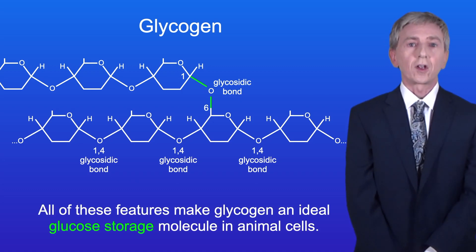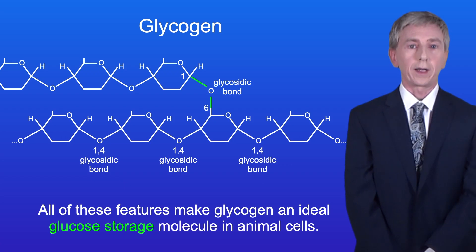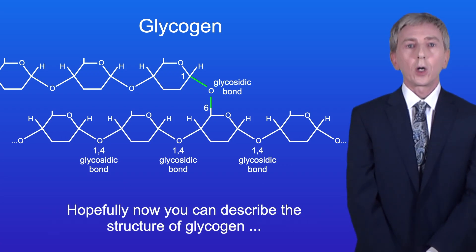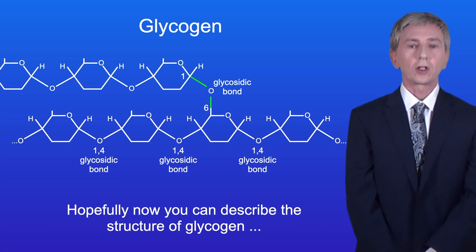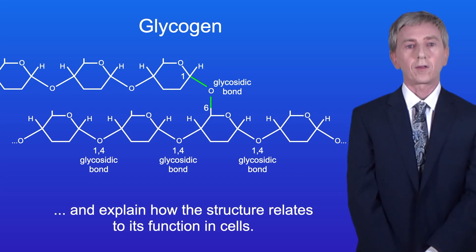So all of these features make glycogen an ideal glucose storage molecule in animal cells. Hopefully now you can describe the structure of glycogen and explain how the structure relates to its function in cells.